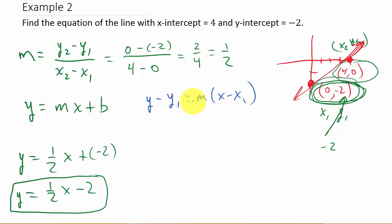So we have y minus y1 equals m times x minus x1. Now the m, we know that's 1 half. But the y1 and the x1, we can either use this point or we can use this point. It makes no difference. We can plug in the 0, negative 2 or we can plug in the 4, 0. It doesn't matter. Let's use the point 4, 0. Let's just do that one.